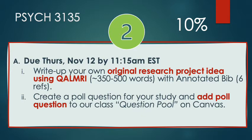Also due on November 12th by 11:15 AM, create a poll question. This should be relevant to your study and inform your study, and you add it to our class question pool, which will be on Canvas — we'll give you a link. When your question is answered by a good-sized sample of people — about a hundred people in this class — the results will help you differentiate between your alternative hypotheses, or at least determine whether your research question is already answered or suggest new directions you might want to go.